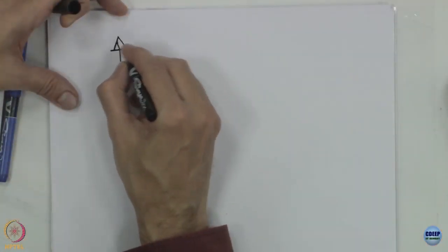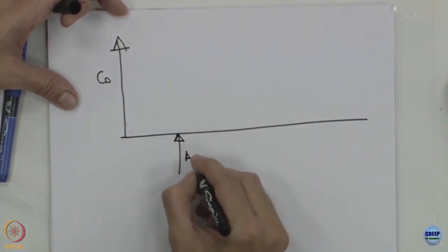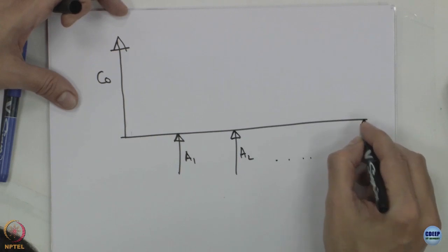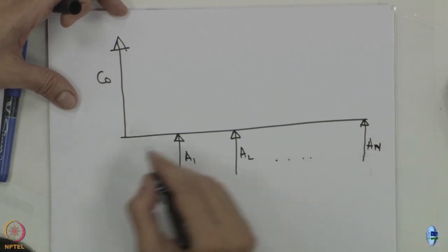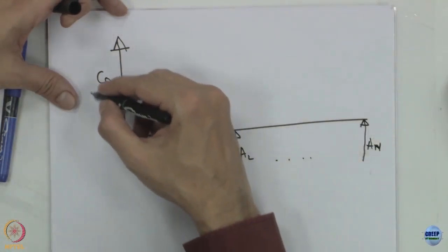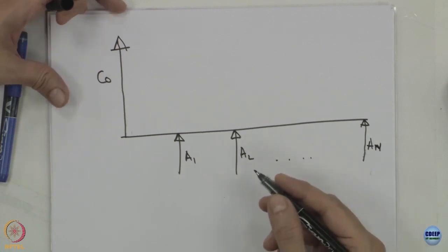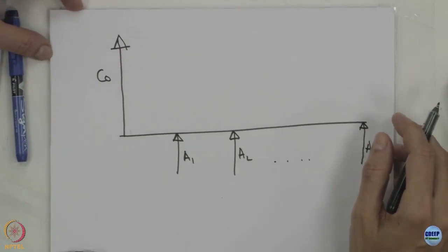Previously, we have been looking at energy economics, where we looked at how we can consider an upfront C0, which is an initial investment, and then we were getting returns A1, A2, through An. This was typically for a project with a tenure of N years. We had an upfront investment and we compared the benefits with the cost, looking at net present value, benefit-cost ratio, internal rate of return, life cycle costing, and annualized life cycle costing.